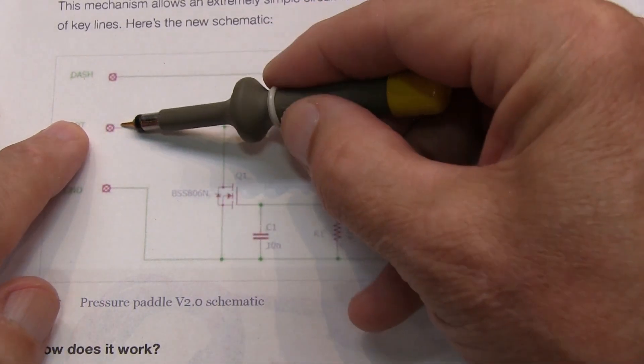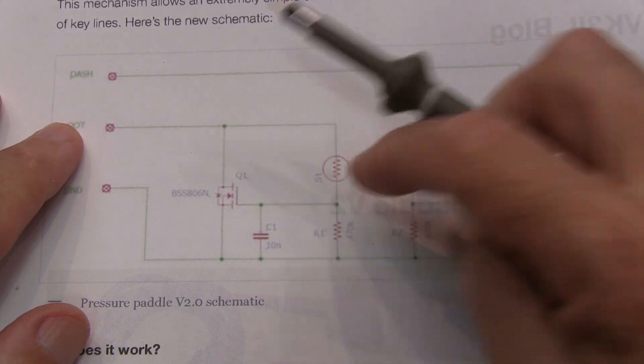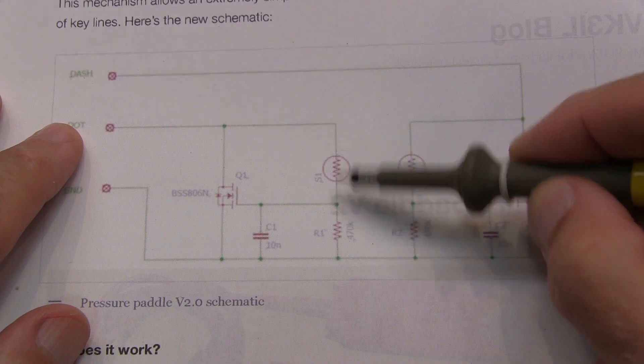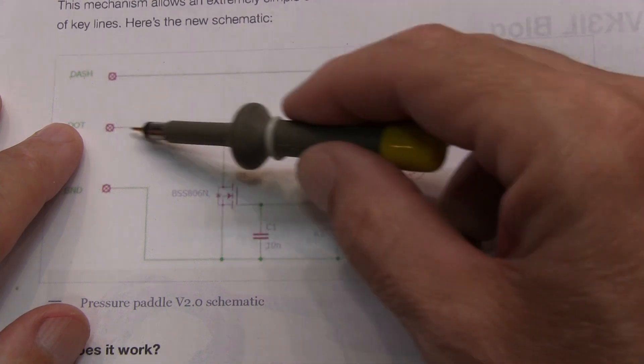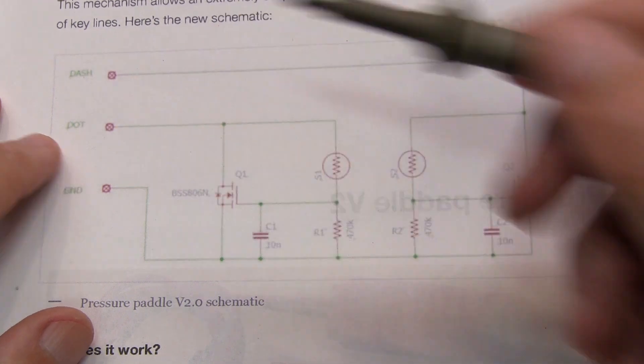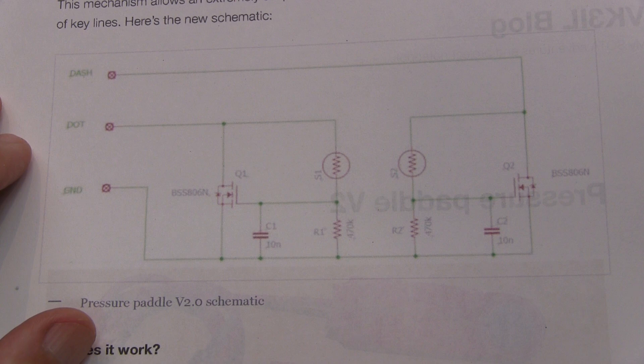therefore keeping that line biased high from the keyer itself. And as soon as you put your finger on that sensor, that resistance drops dramatically, thereby raising the gate voltage, turning on the FET, and therefore dragging down the line and keying the dot or the dash in the keyer. And there's just two copies of that.